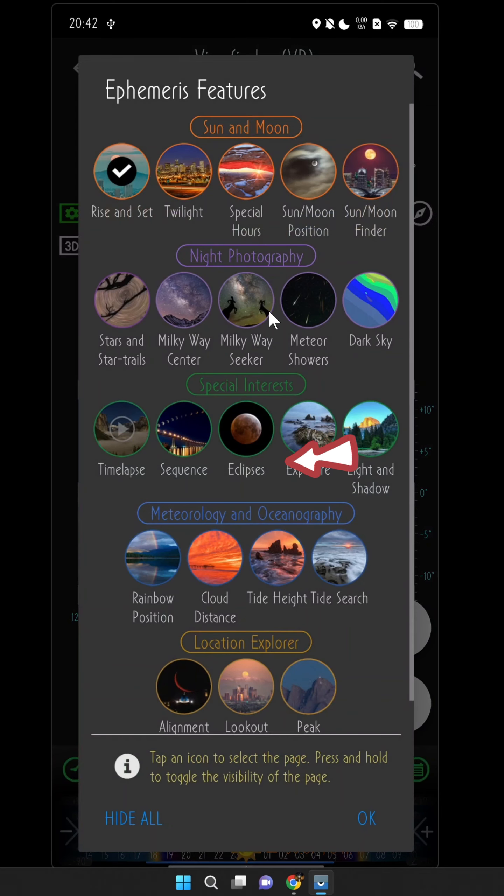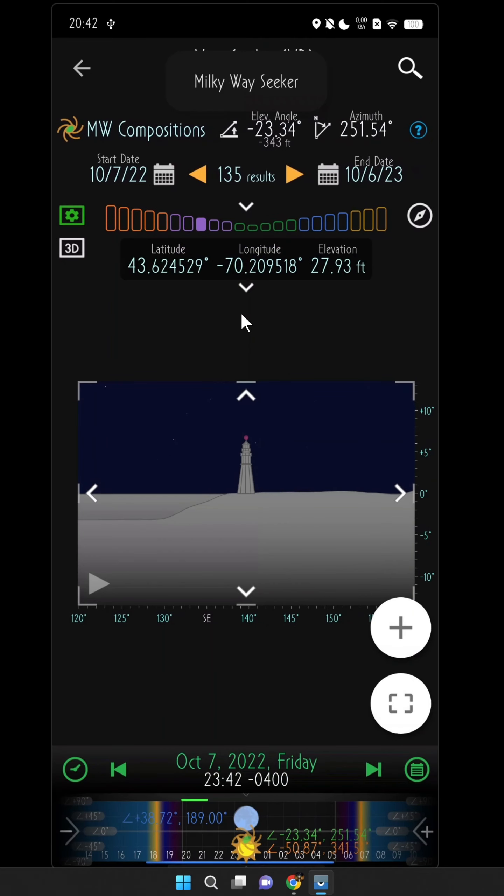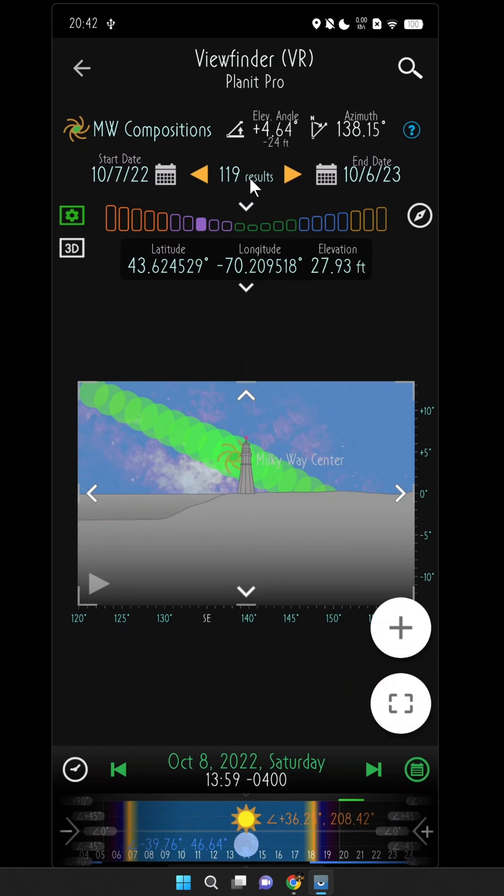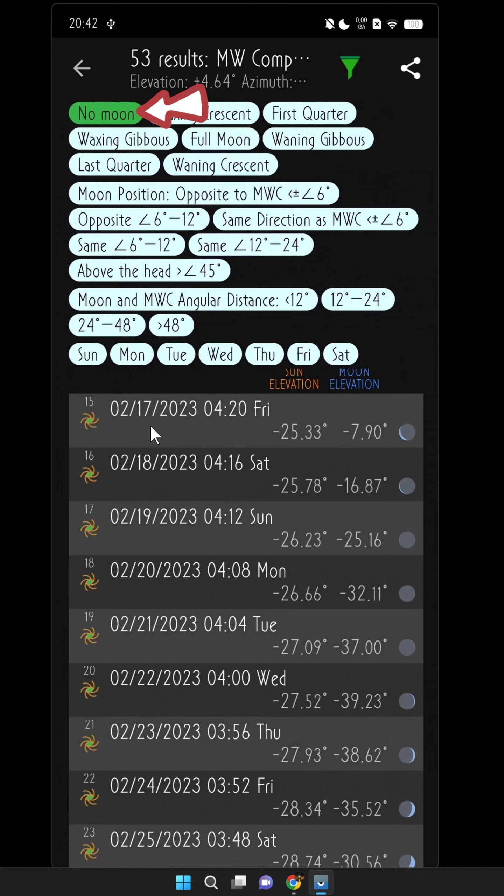So let's say I want to check to see if I can take a Milky Way photo with this. So I'll switch to the Milky Way seeker page and adjust the time and date slider until the Milky Way center rises. And there you go. Let's choose next year and tap to see the list of dates. Select no moon. Now we have the first possible date, February 17th of next year.